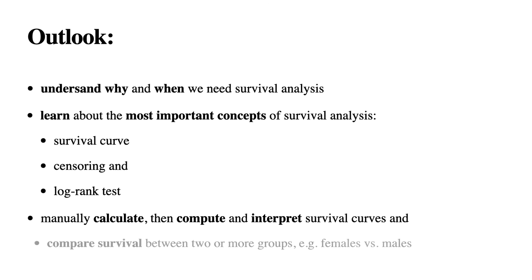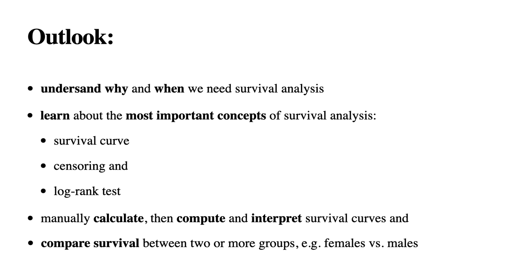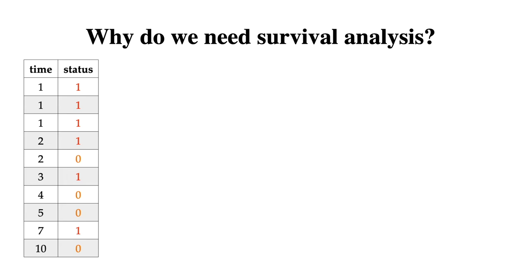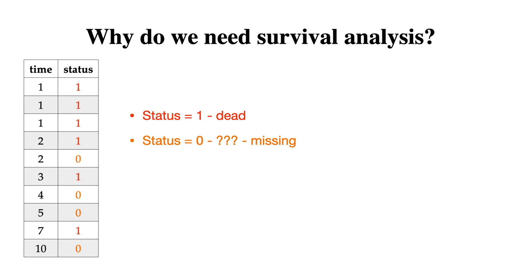Why do we need survival analysis? The short answer: for data like this. We have only two columns — time in days and status. Let's observe 10 people during 10 days after the Titanic crash. The time column shows day numbers 1 through 10, and in the status column 1 means dead and 0 means missing — neither dead nor survived.